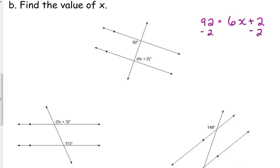Then we just solve for x. Subtract 2 from both sides. We get 90 is equal to 6x. Divide by 6. Those are both, let's hear it. 15? Thank you. 15 is equal to x.